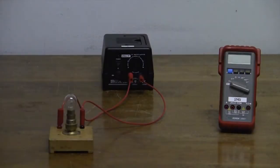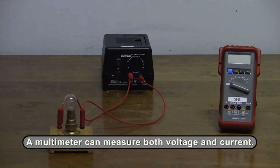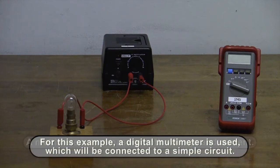A digital multimeter can be used to measure current, voltage and resistance. For this experiment, we will be looking at measuring the current and voltage across a lightbulb connected to a direct current source.